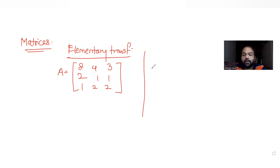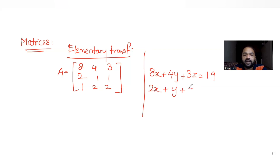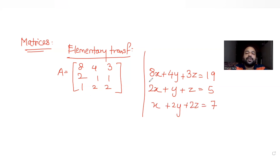There are 3 linear equations given: the first is 8x + 4y + 3z = 19, the second is 2x + y + z = 5, and the third is x + 2y + 2z = 6. We need to find the values of x, y, and z that satisfy these three linear equations.